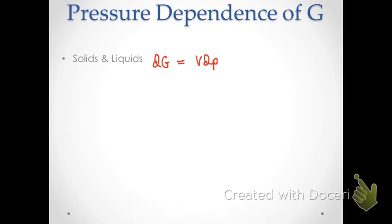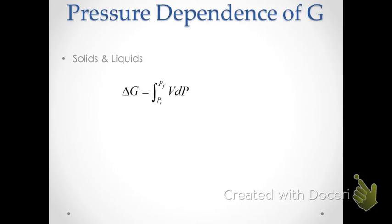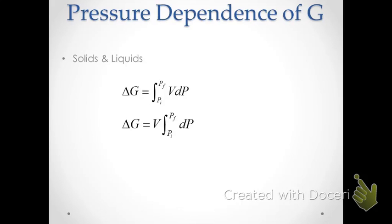Let's take a look first at solids and liquids, and we'll look at the pressure dependence first, with temperature dependence later on. We know that if the temperature is held constant, dG is equal to VdP. To get delta G during a pressure change, we simply integrate both sides. For solids and liquids, they are relatively incompressible, meaning volume doesn't change much during a pressure change. So we make the assumption that volume is approximately constant and pull it outside the integral, leaving us with the simple approximation that delta G equals volume times the change in pressure.